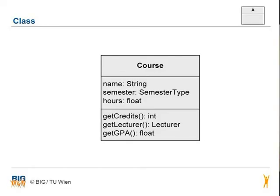The notation of the class is very important. The class is a template for all its objects. It is modeled as a rectangle which can be separated into different sections. Here we have the class course divided into three sections.